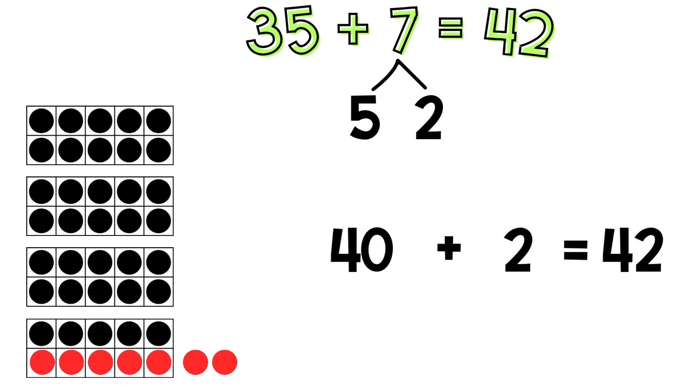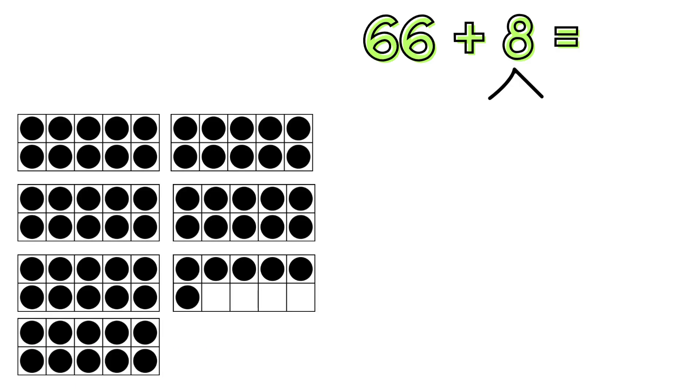I'll show you another one. Then you'll try some with me. For 66 plus 8, I have 66 shown with 10 frames. I'll add 8. I'll start putting chips in the last 10 frame and put the extras outside.